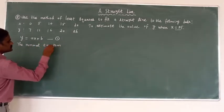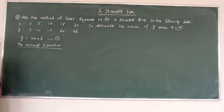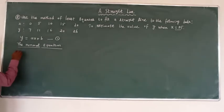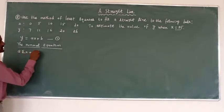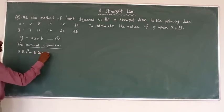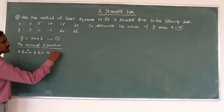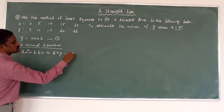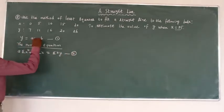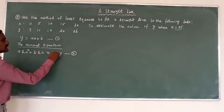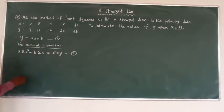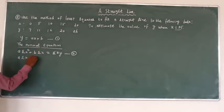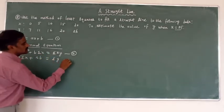The normal equations are: Equation 2: a·σx² plus b·σx equal to σxy. Equation 3: a·σx plus n·b equal to σy.